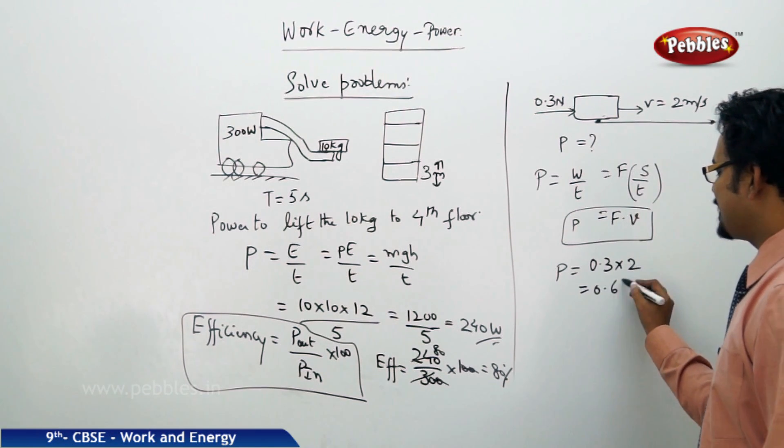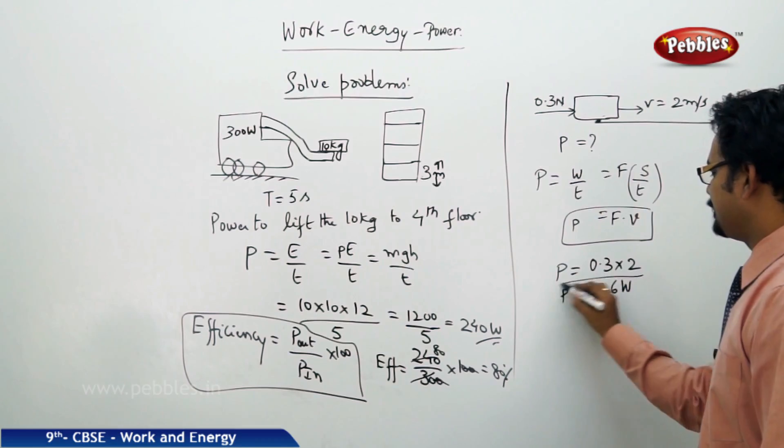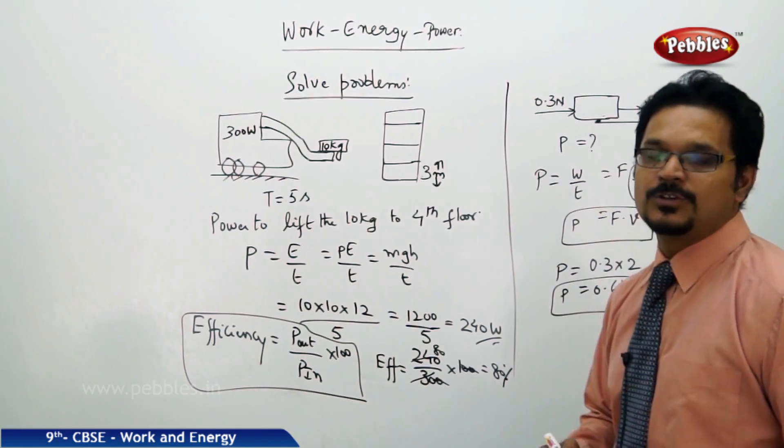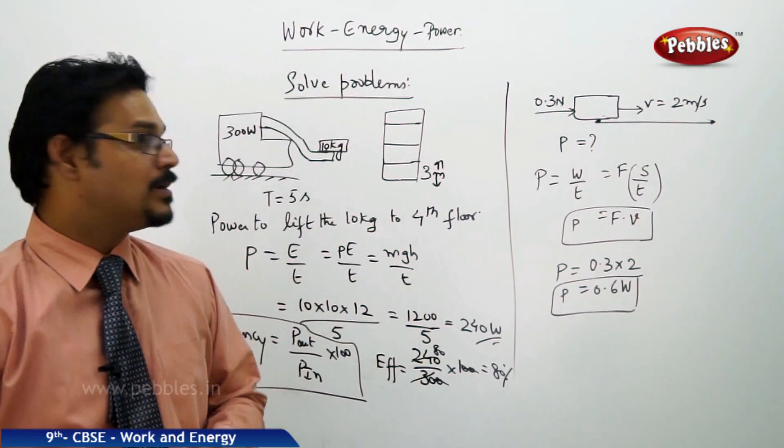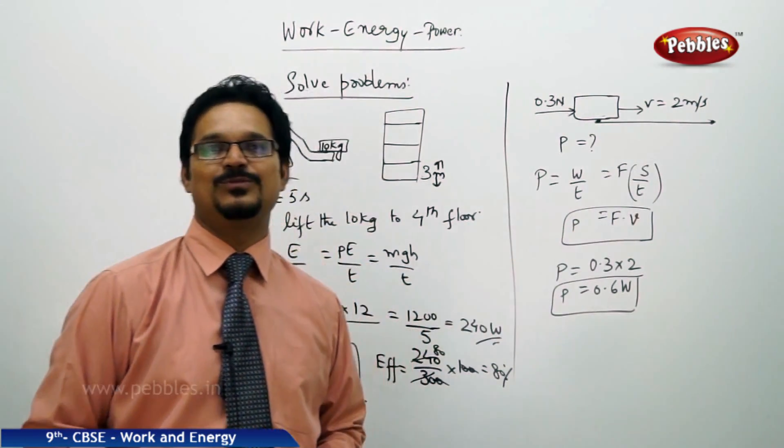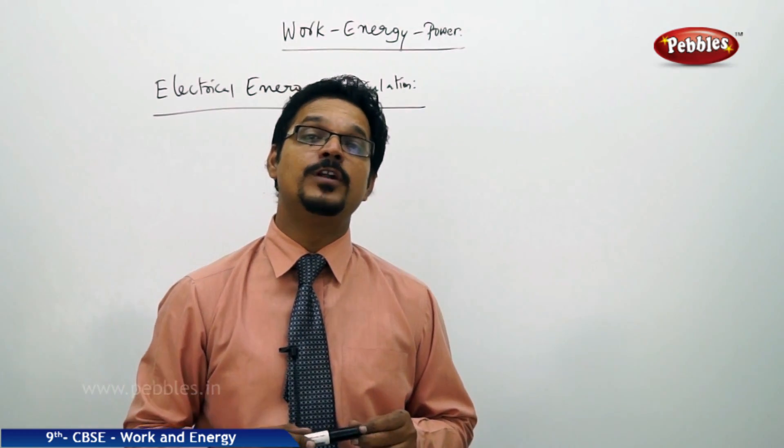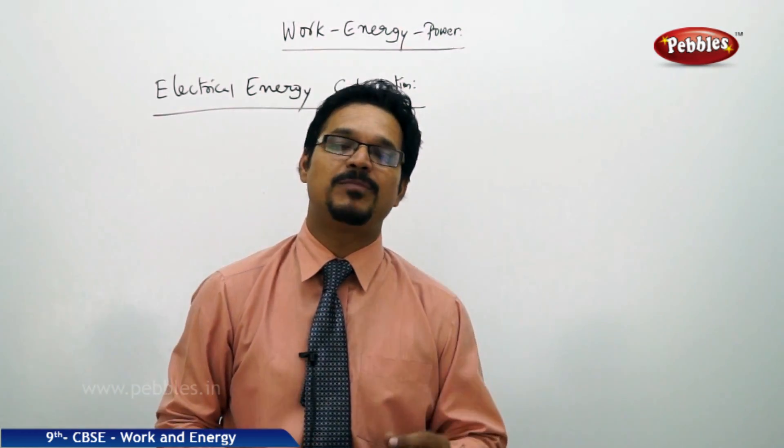Therefore power P equals force 0.3 into velocity is 2, so it is 0.6 watts. So power is work by time, power is energy by time, power is force into velocity also.